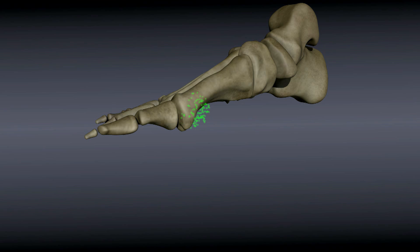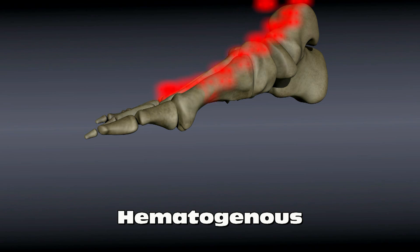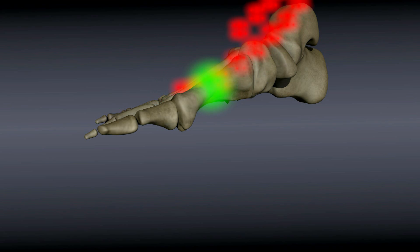The second way that osteomyelitis occurs is when microorganisms travel through the blood until they are able to settle in the bone. This is known as hematogenous infection. Often, this occurs because bacteria from another infection in the body travel through the blood stream to the bone.